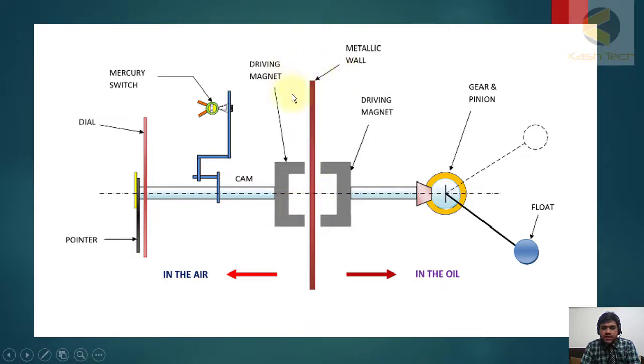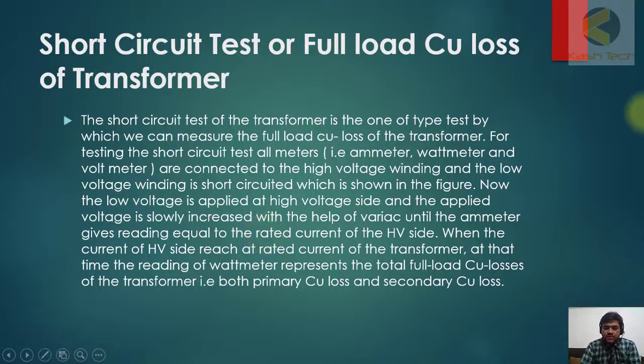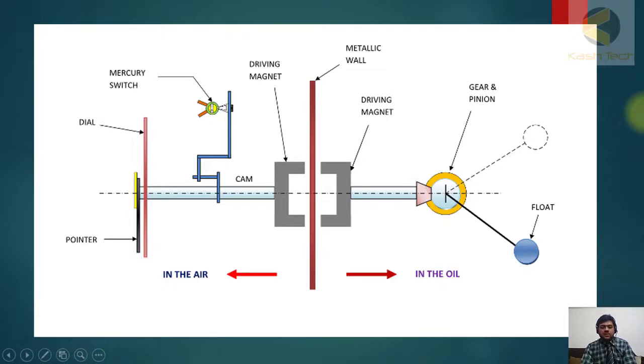In between, at the other side, they have another magnet. It will be attracted as per the movement of this driving magnet. Then you can see there is a mercury switch and there is a cam here which will drive, for example, the dial. This is the gauge. This will drive the pointer and it will show you the exact moment. Thank you very much. I hope you enjoyed the lecture.